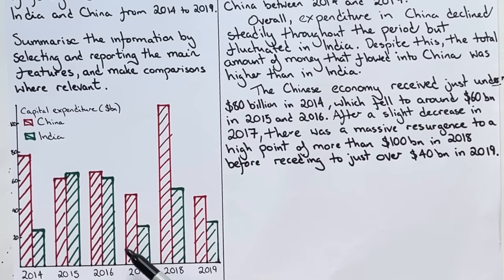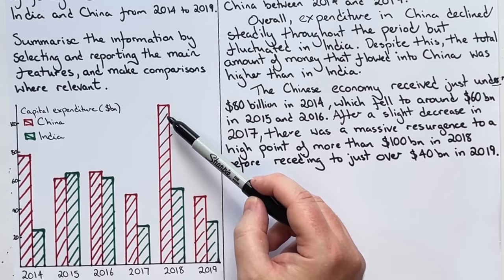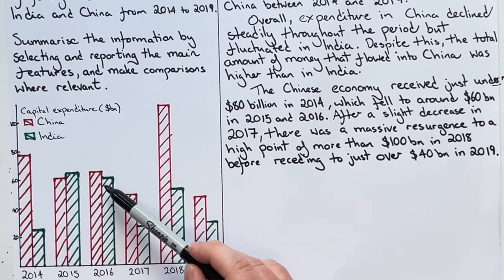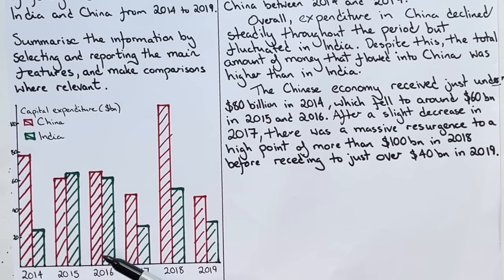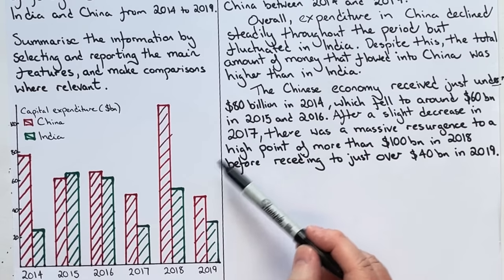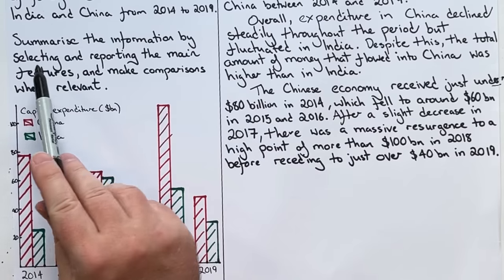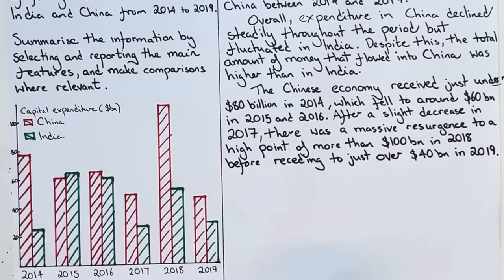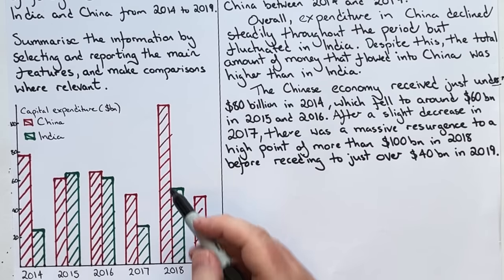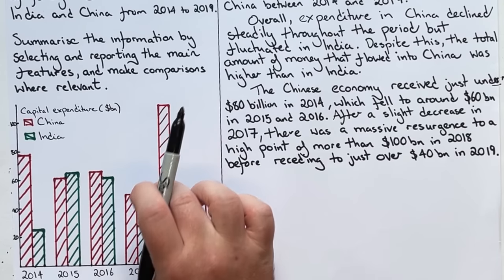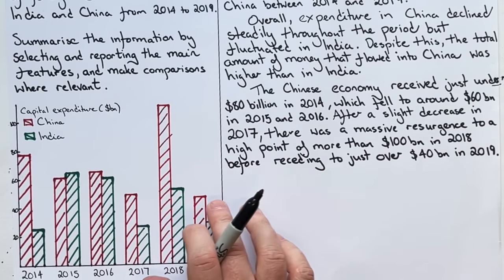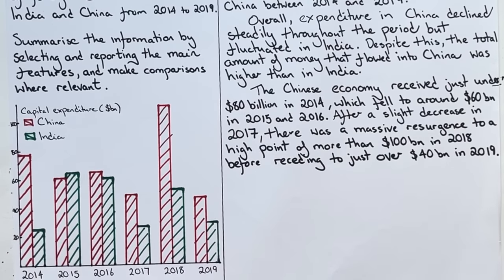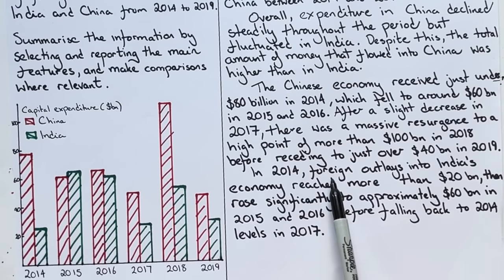The next logical thing is to describe the dip and then the massive jump. 'After a slight decrease in 2017, there was a massive resurgence to a high point of more than 100 billion in 2018, before receding to just over 40 billion in 2019.' I haven't put the exact figure for 2017 — just 'after a slight decrease' — because you're summarizing and selecting. But the 2018 high point is very important, so I'm highlighting it: 'massive resurgence,' 'high point,' 'more than 100 billion.' Then it drops back down to around 40 billion in 2019. That's China done.